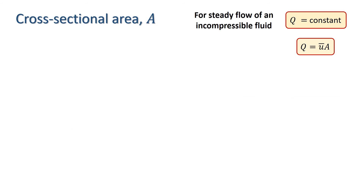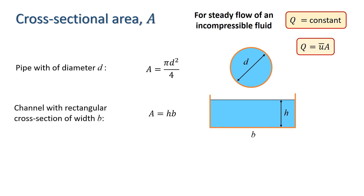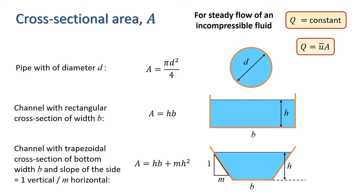Because of the nature of the continuity equation and other conservation laws, cross-sectional area plays an important part in applying the equations. The most common ones we deal with in civil engineering are circular cross sections for pipes, and channels with rectangular or trapezoidal cross sections. Note that in the case of channels, we have to be careful, since the cross-sectional area of interest is defined by the depth of the water, not just by the dimensions of the channel.